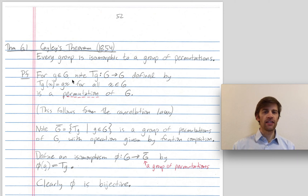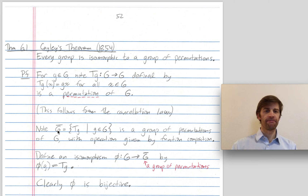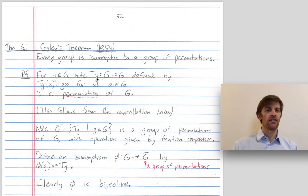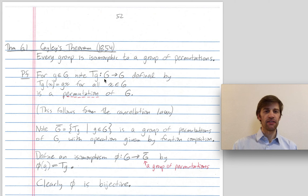So let's say G is my group. I want to find a group of permutations that's isomorphic to it. My group of permutations will be G-bar. For every element little g in my group I need to find a permutation. My permutation is going to be T sub g. This permutation is defined just by multiplying on the left by little g.